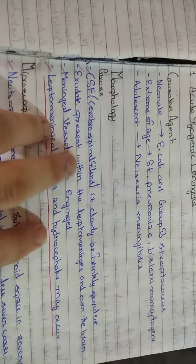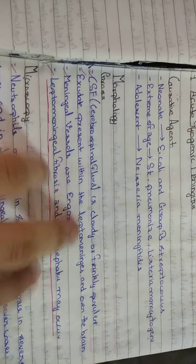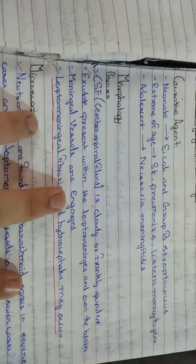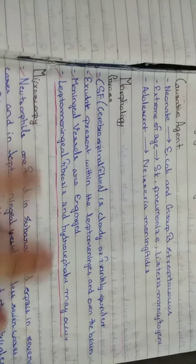Exudate is present within the leptomeninges and over the brain. Meningeal vessels are engorged. Leptomeningeal fibrosis and hydrocephalus may occur.